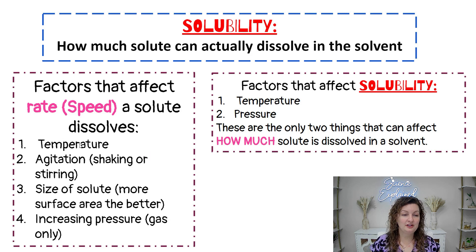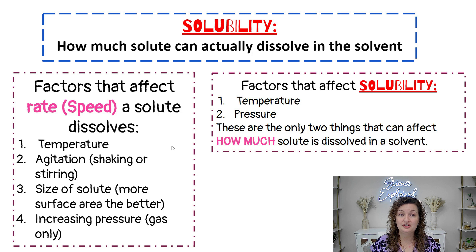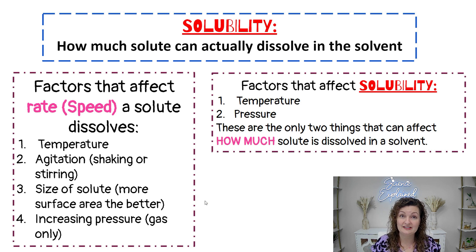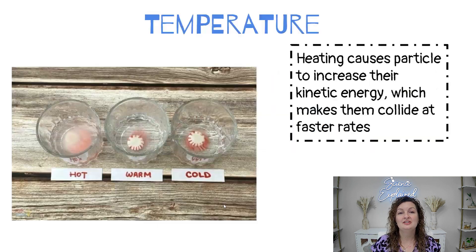Here are four factors that contribute to the speed of dissolving: the first one being temperature, the second one being agitation, the third one being the size of the solute, and the fourth one only applies to gases — and that's the increase in pressure.